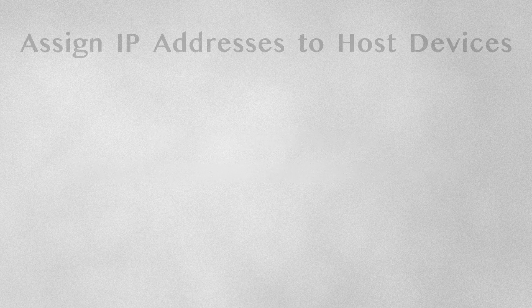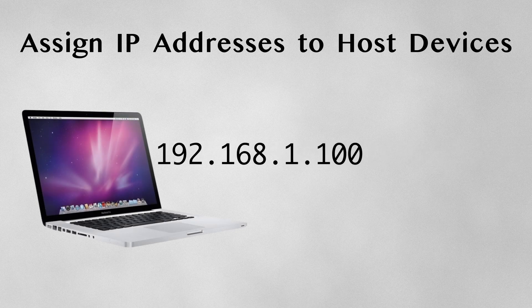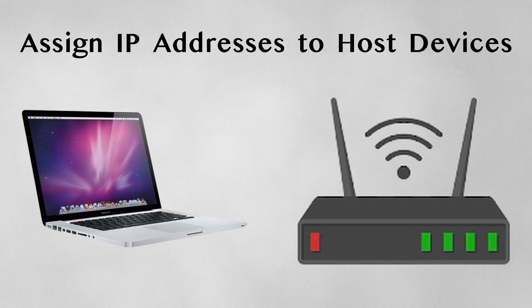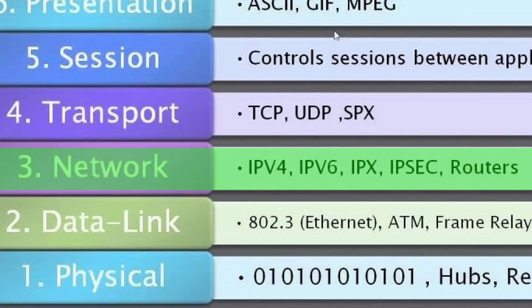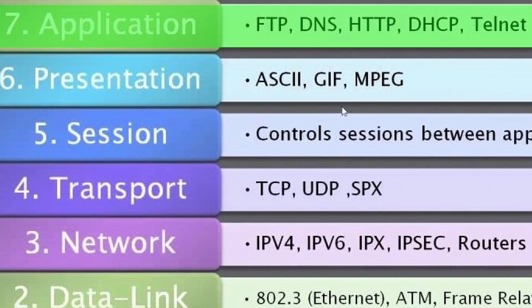So what is DHCP? This is the Dynamic Host Configuration Protocol and is used to automatically assign host devices on the network an IP address. This could be supplied by a dedicated DHCP server, or most of the time a router with a DHCP server built in, as routers operate at Layer 3 of the OSI model and DHCP is Layer 7.